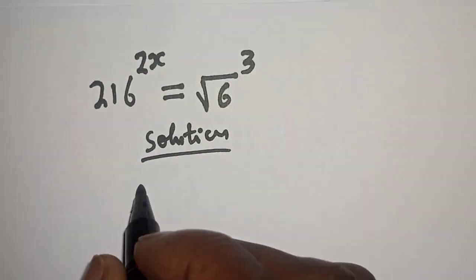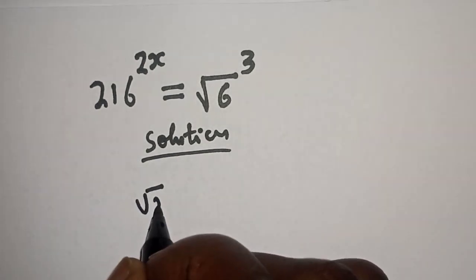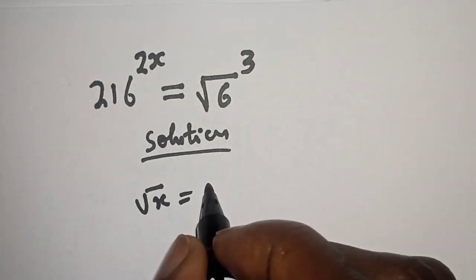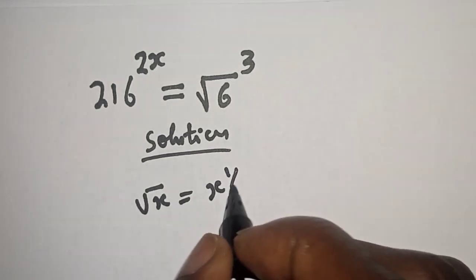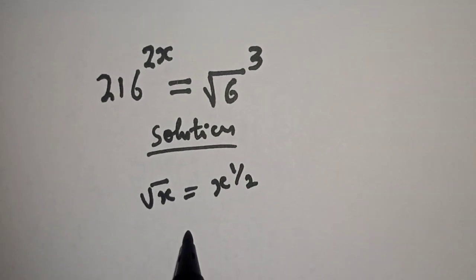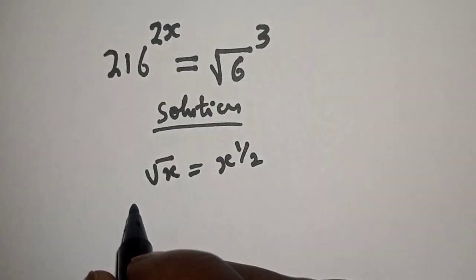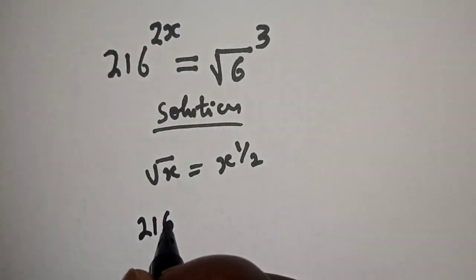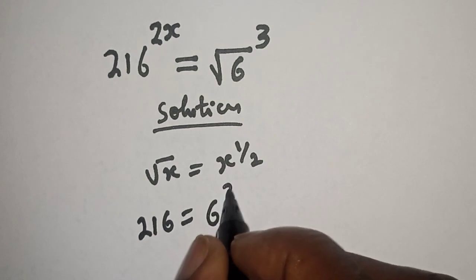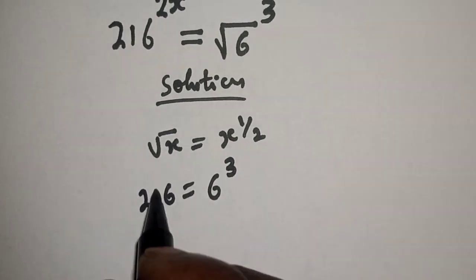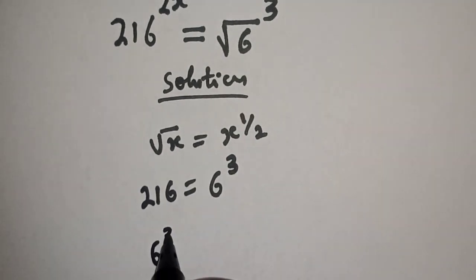Solution: We have, take note of this, that if you have square root of x, this is equal to x raised to power 1 over 2. And 216 is equal to 6 raised to power 3. We have 6 raised to power 3.